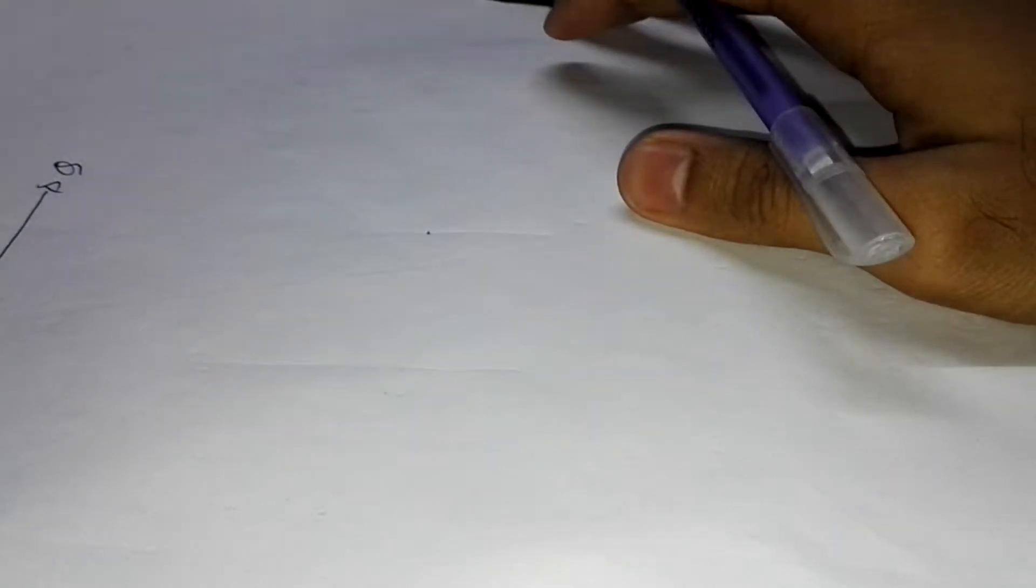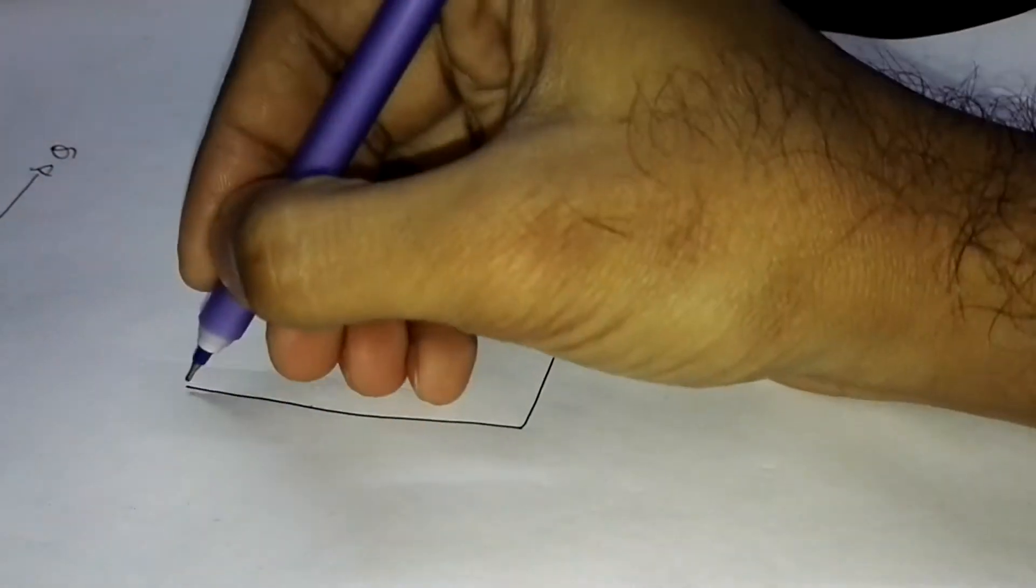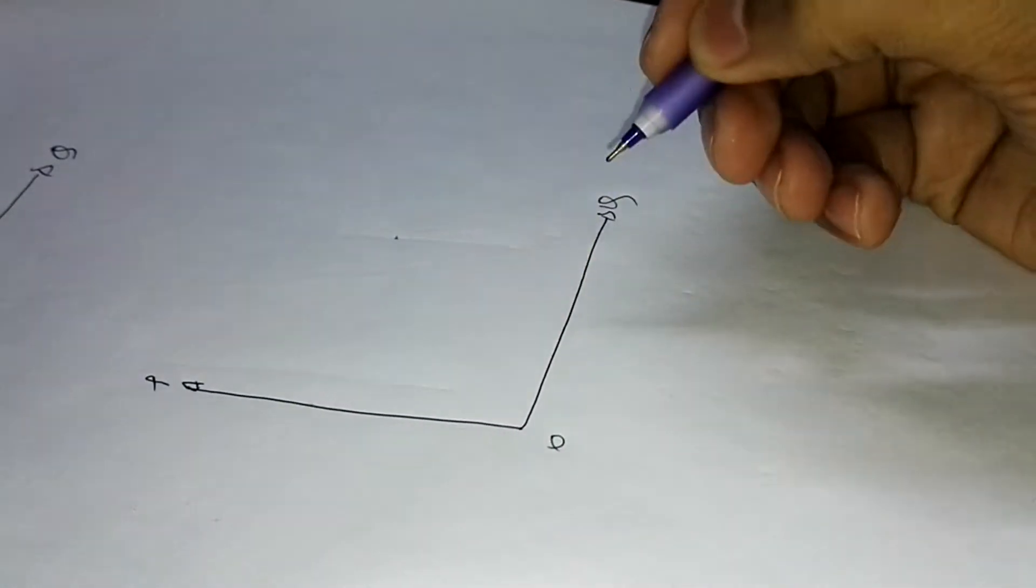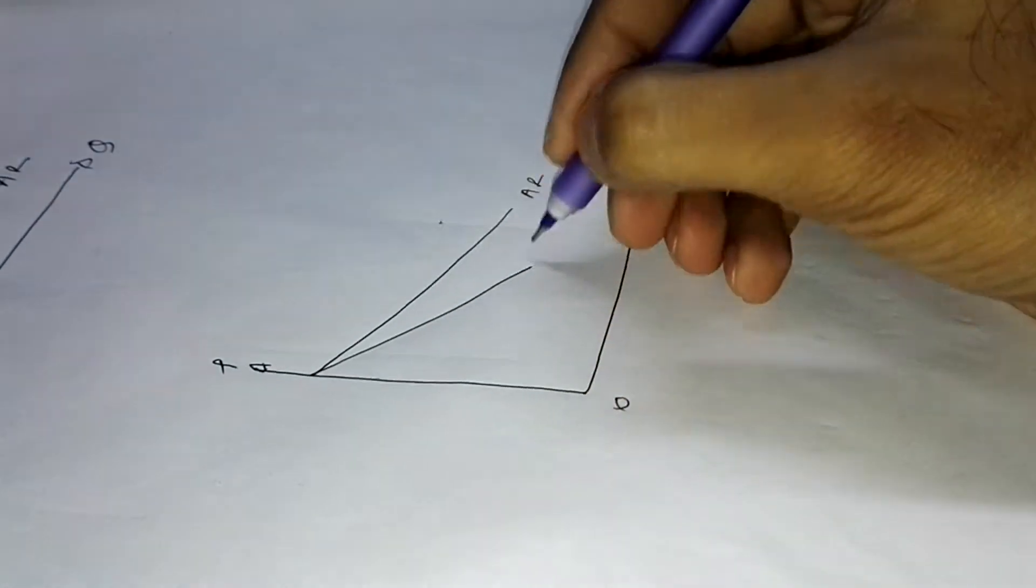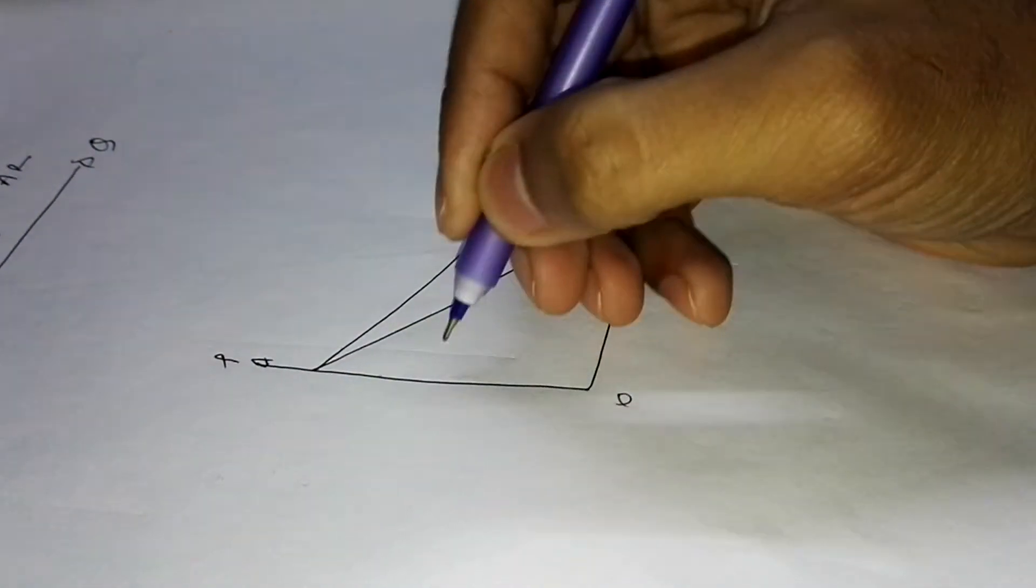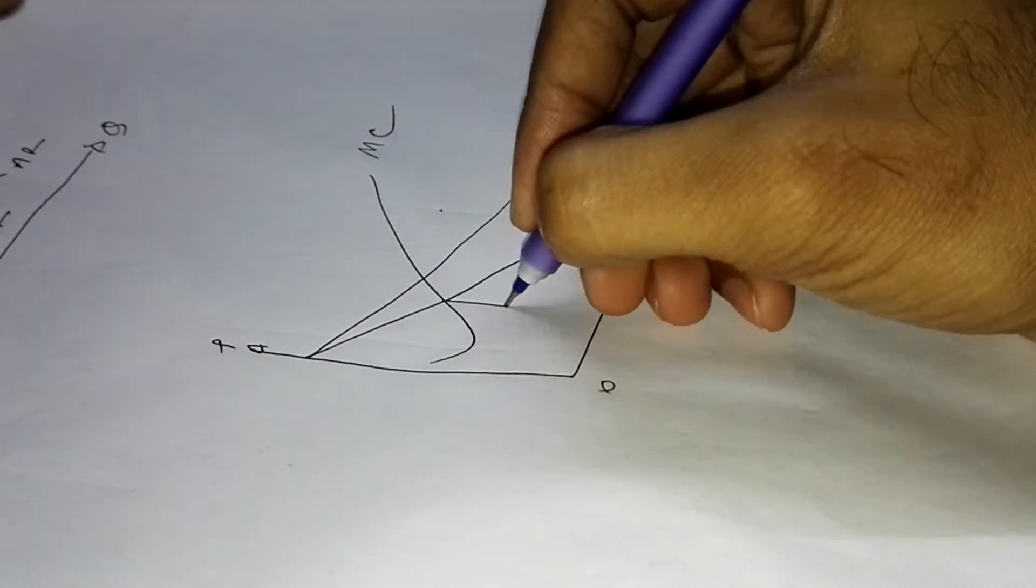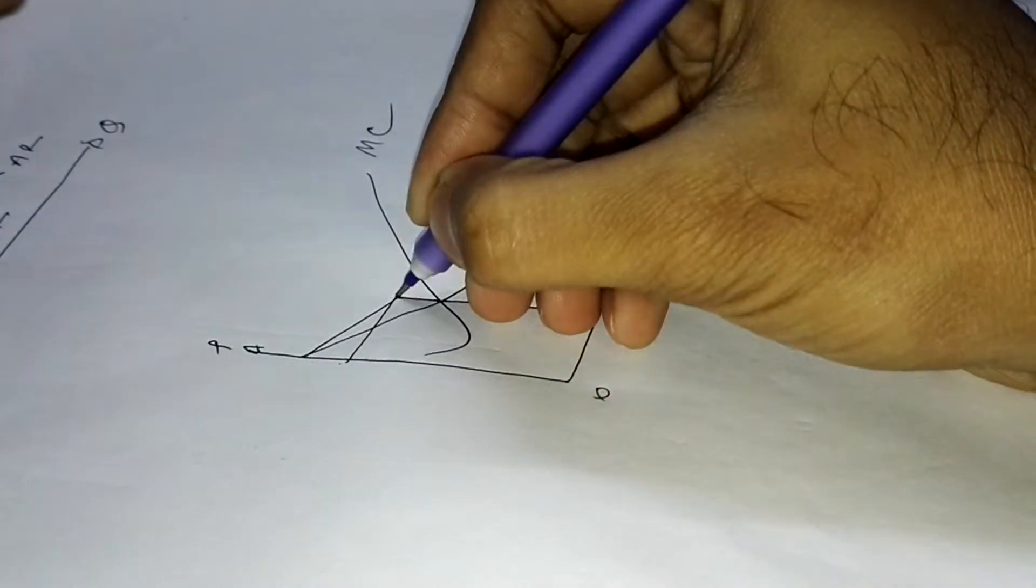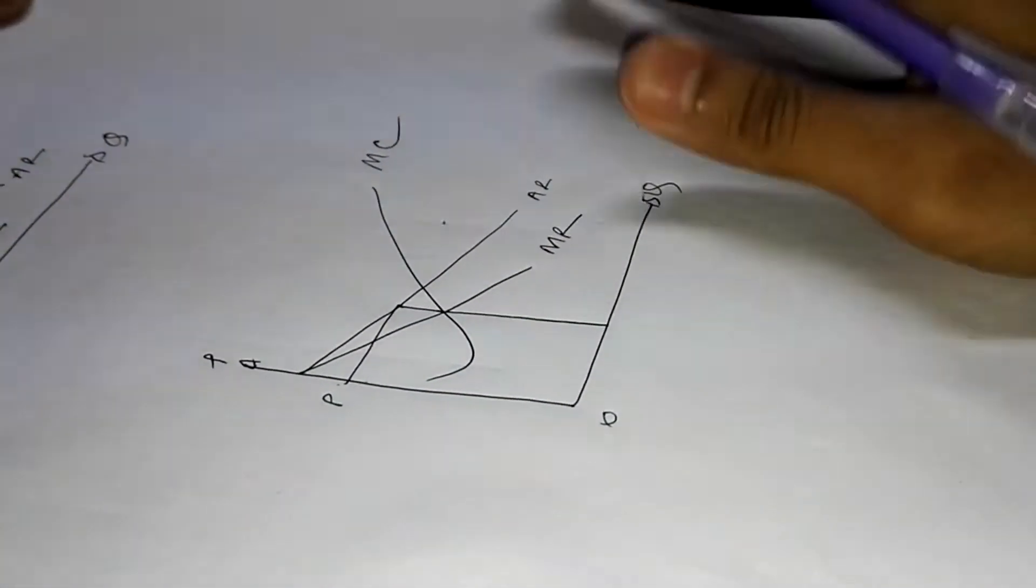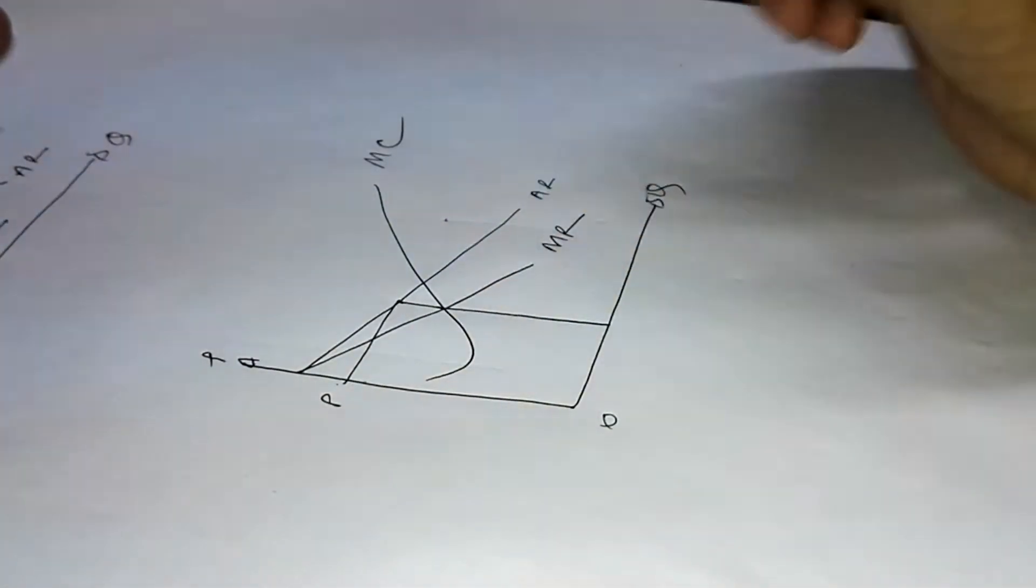Let's check when a monopolist firm is facing extreme profit. As we know, this is the graph with P and Q axes. This is our AR, this is MR, this is MC. The price indicating point is here. This is our usual monopolist firm graph, but if the AC went below this point, like if AC is like this...